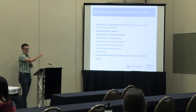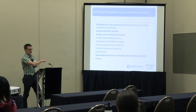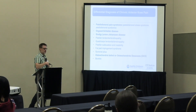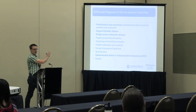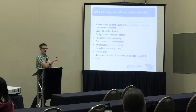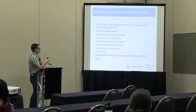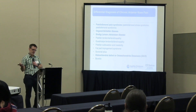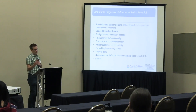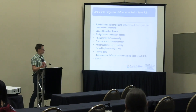A lot of these conditions have a similar pattern — Sinding-Larsen-Johansson (SLJ) at the inferior pole of the patella, patellar tendonitis over the patellar tendon, Hoffa's fat pad impingement on either side of the patellar tendon. We aren't super creative with names, but the location is what you follow.